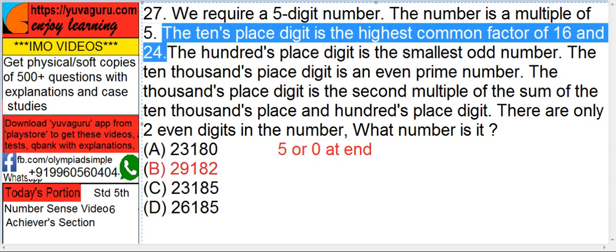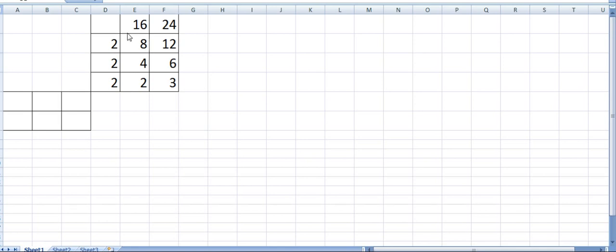The ten's place digit is the highest common factor of 16 and 24. How to find the HCF of 16 and 24? Basic. Write 16, 24, draw lines over here. Then 2, 8, 16, 12, 24.